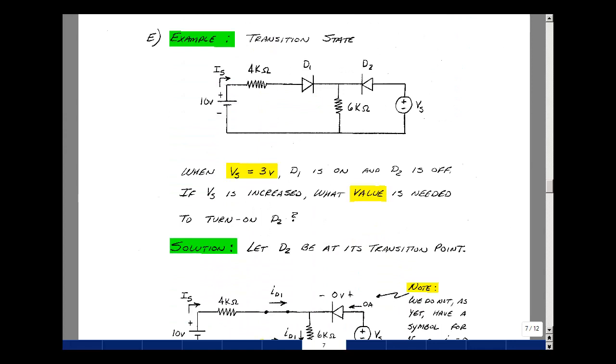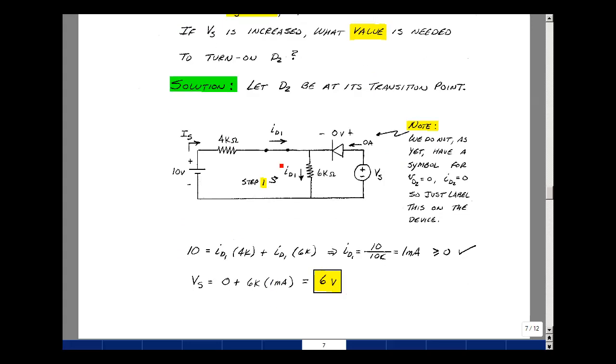Let's take a look at an example of what's called the transition state. In the previous example, we had a voltage source here. I'll call it V sub s. It had a value of three volts. And when we had that condition with the 10 volts, the diode D1 was on and D2 was off. Now what would happen if we began to increase V sub s? At what point would it cause the diode D2 to turn on and become a short circuit? So let's assume that diode D1 is still short. We're going to vary V sub s such that this diode is going to start to conduct. Let's figure out what it takes to take us to the transition point. In other words, there's no voltage across it, no current going through it. We're going to label it right on the drawing.